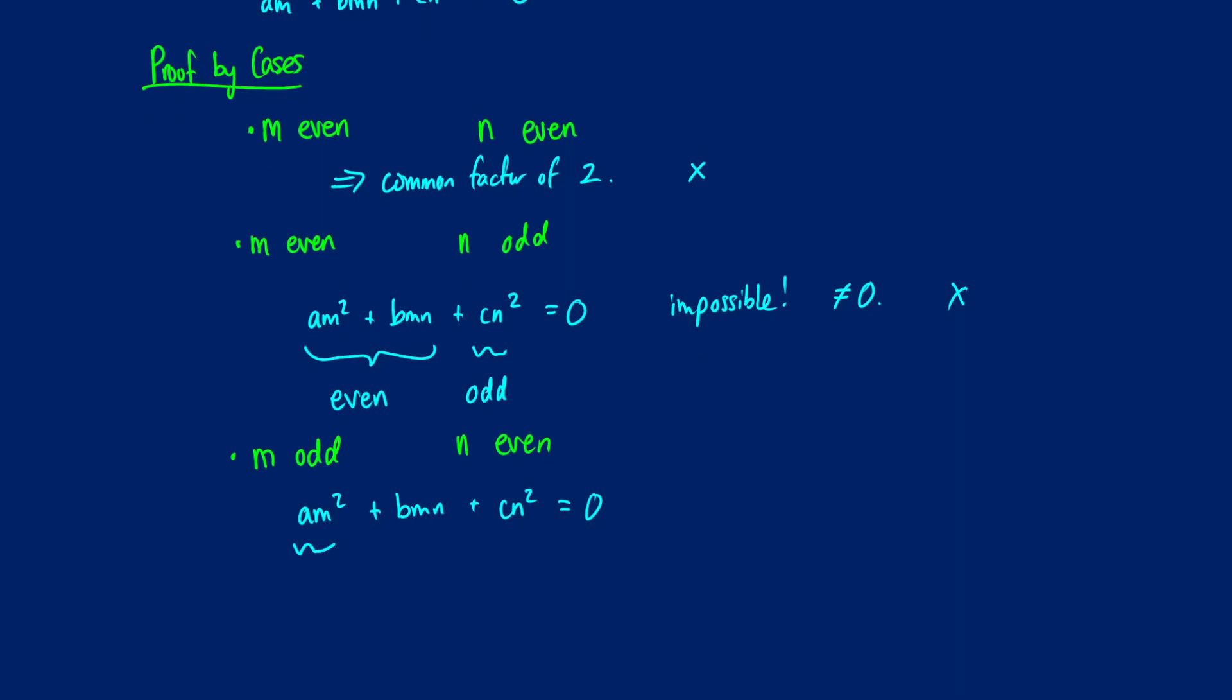Well, m is odd, so am squared is going to be odd. And then n is even, so in bmn and cn squared, we can pull out an n. So we know that this bit right here is going to be even.